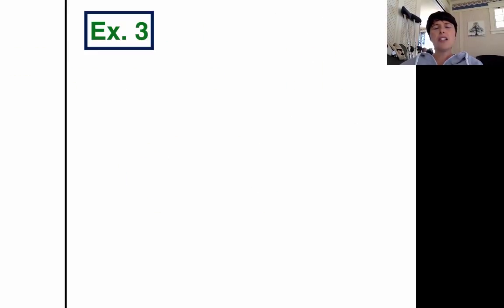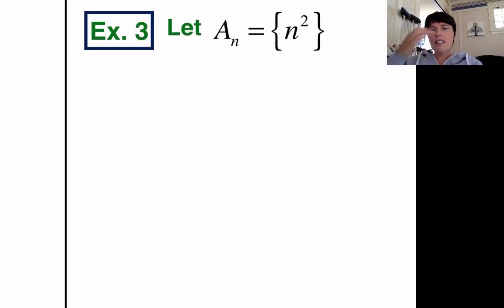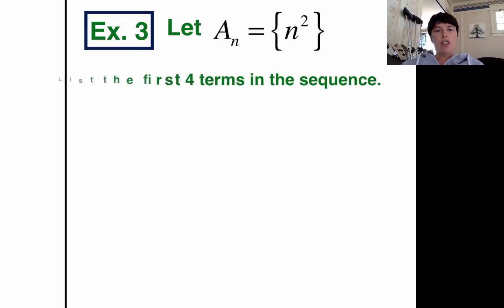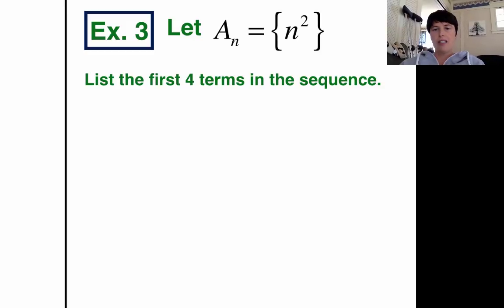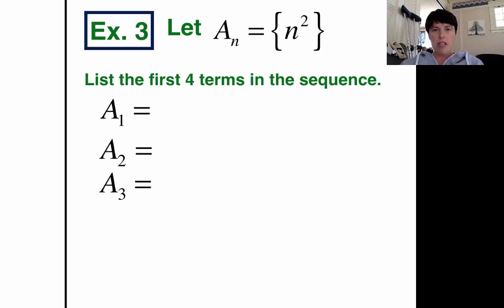Let's look at this. Let's look at an example 3, something a little different here. Let's let a sub n equal n squared. And I'm going to use a brace. n squared. Okay. Here's my question: List the first four terms in the sequence. That means what's a 1, a 2, a 3, and a 4. So we're going to make a list.